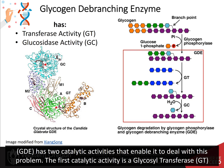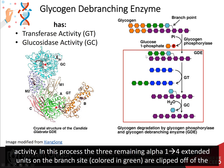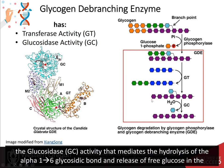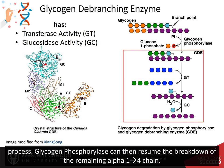The first catalytic activity is a glycosyltransferase activity. In this process, the three remaining alpha-1,4 extended units on the branch site are clipped off and attached to a straight chain of alpha-1,4 extended glucose residues. The second part of the reaction requires glucosidase activity that mediates the hydrolysis of the alpha-1,6 glycosidic bond and releases free glucose in the process.